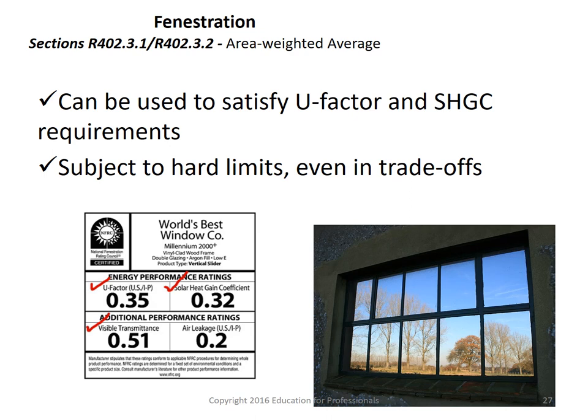Area-weighted averaging allows trade-offs for U-factors. For example, if the requirement is 0.5, you could have all windows at 0.5, or half at 0.6 and half at 0.4, which averages to 0.5 and achieves compliance. To calculate the area-weighted average U-factor, multiply each window's U-factor by its area, sum all the products, and divide by the total glazing area. This provides flexibility to use different windows in different locations depending on orientation.